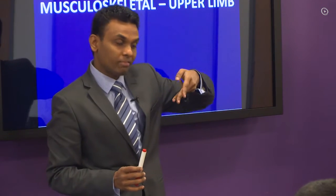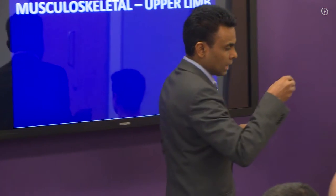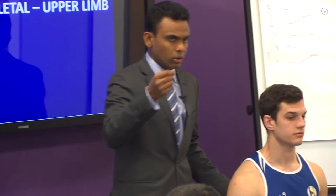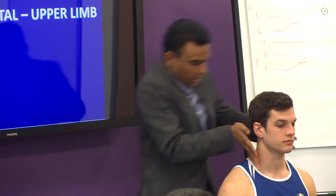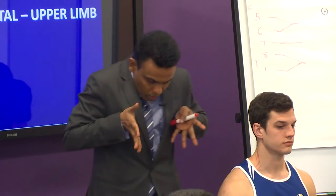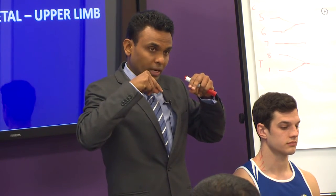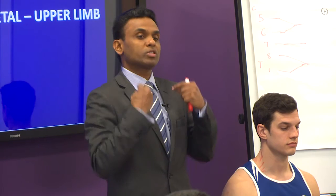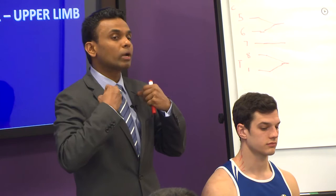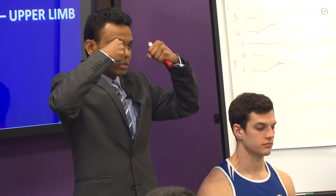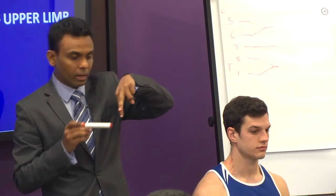The three scalene muscles are of different lengths. They all start from the transverse processes of the cervical vertebrae and insert into the clavicle, the first rib, and some into the second rib. This is why they are accessory muscles of respiration — when you inspire, these ribs are pulled up by the scalene muscles.